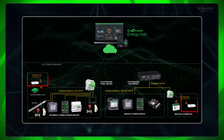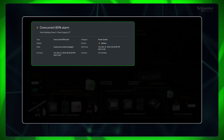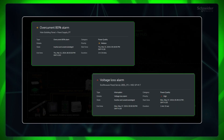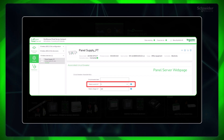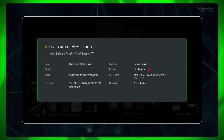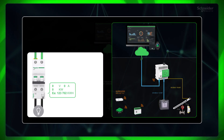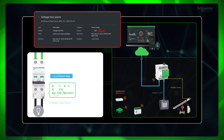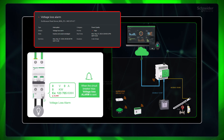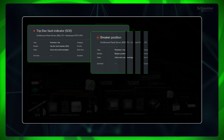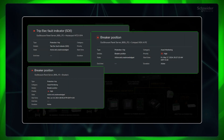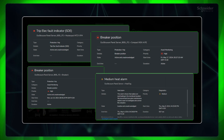Let's see a few device alarms. If a PowerTag Energy sensor with panel server is at the site, it gives overcurrent 80% and voltage loss alarms, which come in the category of power quality. When the current value exceeds 80% of the nominal current of the sensor, an overcurrent 80% alarm is generated with medium priority. When the voltage becomes zero, the voltage loss alarm is generated with high priority. If the PowerTag Energy sensor is installed at the load side, voltage loss means a possible breaker trip. Breaker alarms, ACTI9 auxiliary status alarms through smart link, and heat tag alarms are some additional examples of device alarms.